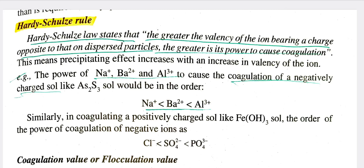Comparing the coagulation power of Na⁺, Ba²⁺, and Al³⁺: the coagulation of a negatively charged sol such as As₂S₃ increases with the valency of the cation.